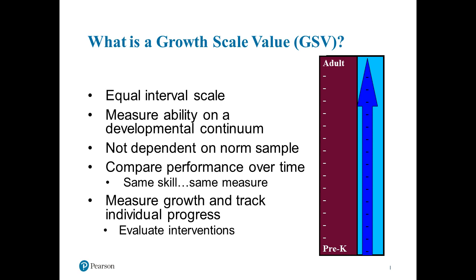What the growth scale value (GSV) does is compare a child's performance against themselves from time one to time two — it's not dependent on the norm sample. You're looking at an equal interval scale looking at ability across a developmental continuum. As a skill develops, the growth scale value will increase from time one to time two, or it'll flatten out if it doesn't increase quickly. It's representative of how fast a child develops a specific skill.